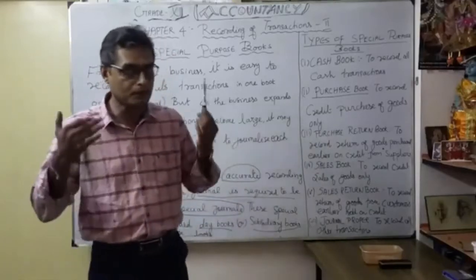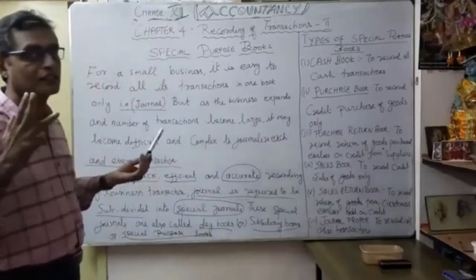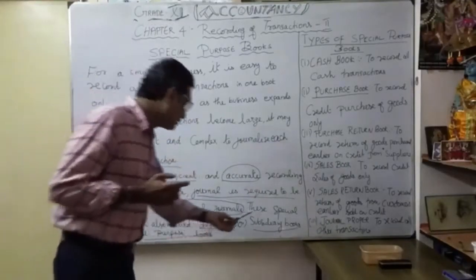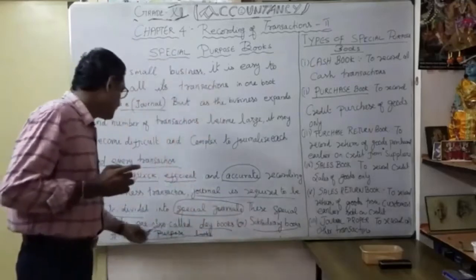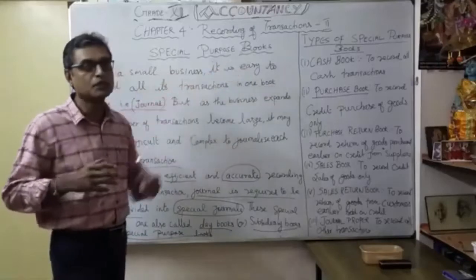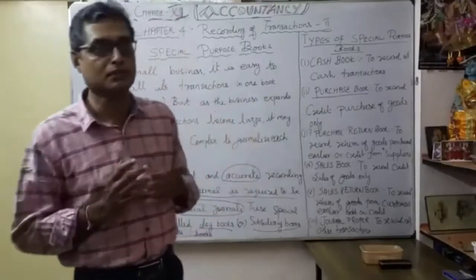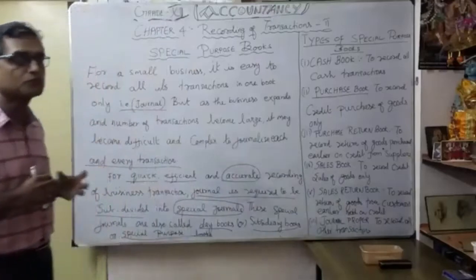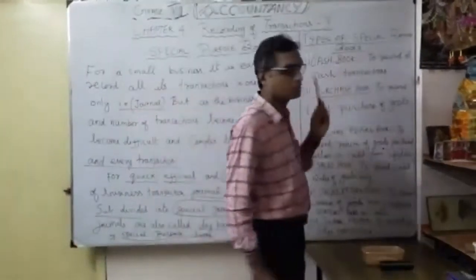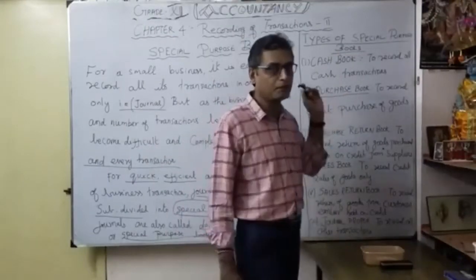So why is the requirement of special purpose books? Only because whenever you want to expand the business, more transactions come. In that situation, you can't record all the transactions; it becomes difficult and more complex to journalize each and every transaction. That is why you are going to use special purpose books — subdivided into special journals. These are called by three names: day books, subsidiary books, or special purpose books.